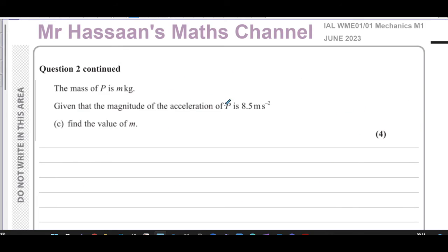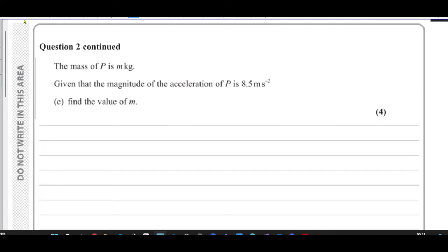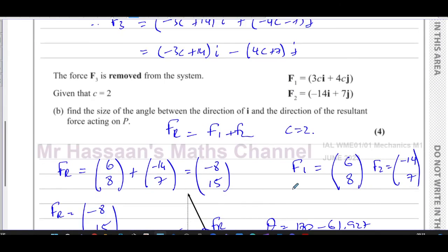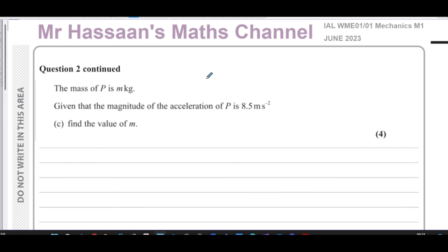Now for part C, it says the mass of P is m kilograms, given that the magnitude of the acceleration is 8.5 meters per second squared, find the value of m. So we need to know the resultant force, which we worked out was minus 8, 15. So we know that the resultant force is minus 8, 15. Given that the magnitude of the acceleration is 8.5, find the value of m.